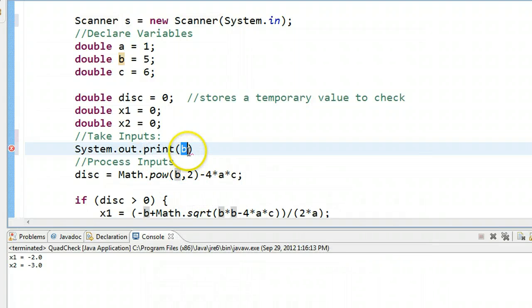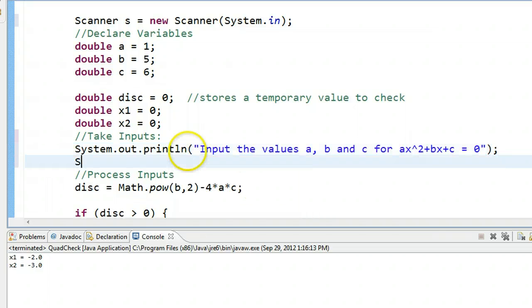So what I'm going to do here is first tell the user exactly what I want them to do. So system.out.println input the values a, b, and c for ax to the power of 2 plus bx plus c.